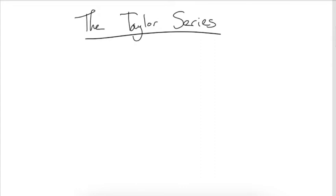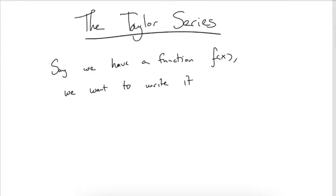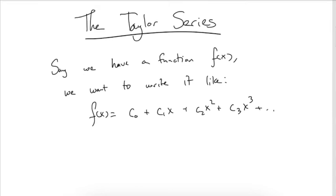Say we have a function f(x) and we want to write it as a power series: f(x) = c₀ + c₁x + c₂x² + c₃x³ + .... The whole game is figuring out what those constants c₀, c₁, c₂, ... are. The Taylor series method is precisely a method for determining those constants.